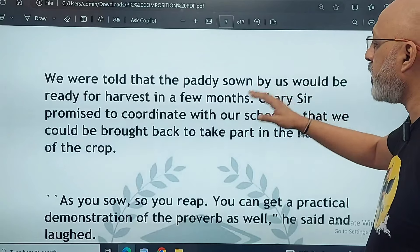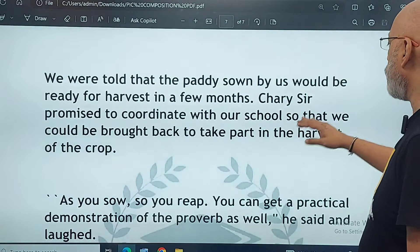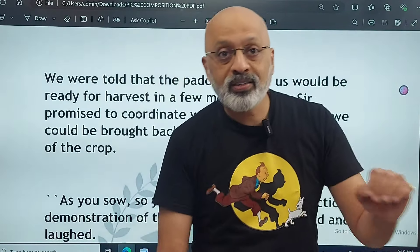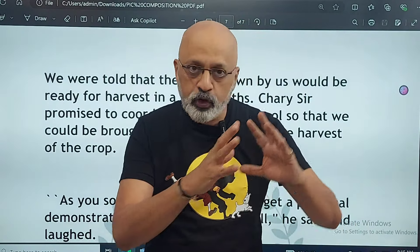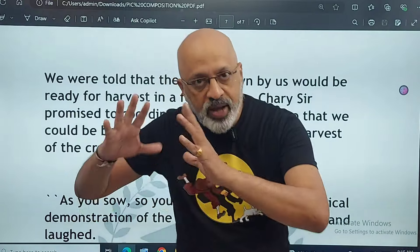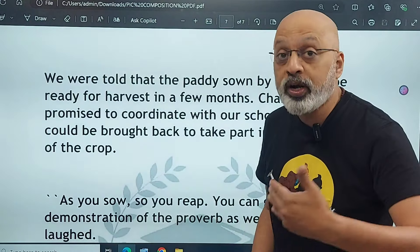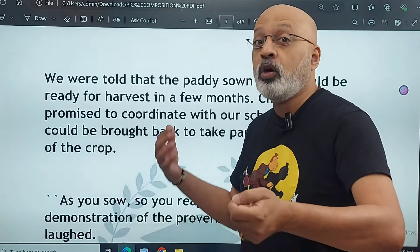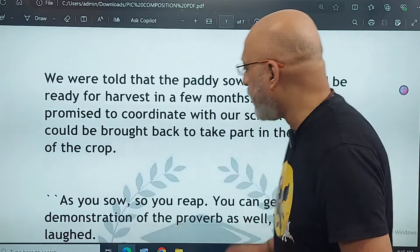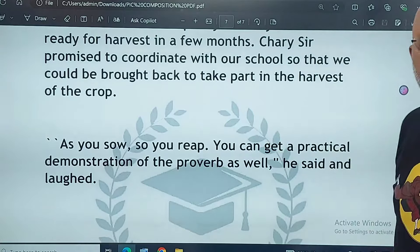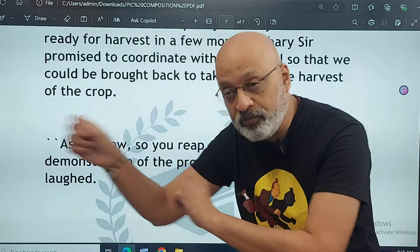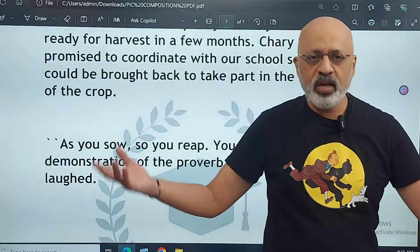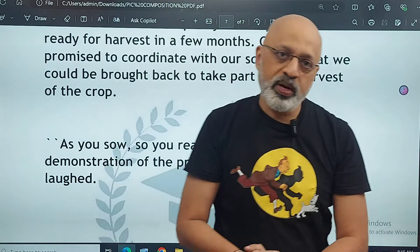'We were told that the paddy sown by us would be ready for harvest in a few months. Chari sir promised to coordinate with our school so that we could be brought back to take part in the harvest of the crop.' You have talked about what you did, what the interaction was like, and what would happen in the future. For the ending, depending on the subject, either a twist in the tale or a feel-good ending. This is not a suspense kind, so a feel-good is much better: 'As you sow, so you reap — you can get a practical demonstration of the proverb as well during the harvest season,' he said and laughed. That's how a feel-good essay is constructed.